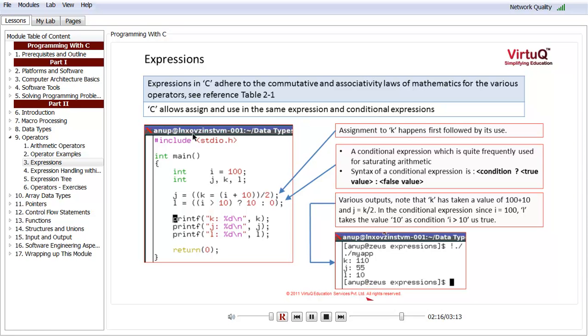The conditional expressions form a very important or very much used part of the C language. They are quite popular in having saturating arithmetics, no longer so because of certain instructions which have got introduced in the processors, but at least previously.